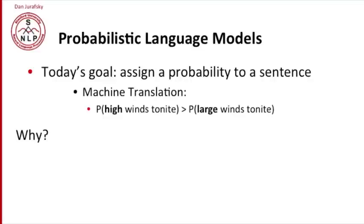This comes up in all sorts of applications. In machine translation, for example, we'd like to be able to distinguish between good and bad translations by their probabilities. So high winds tonight might be a better translation than large winds tonight, because high winds go together well.